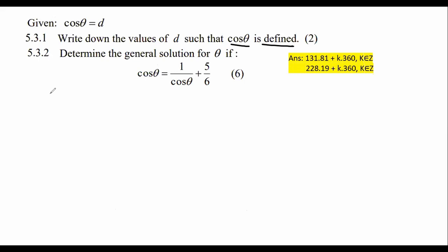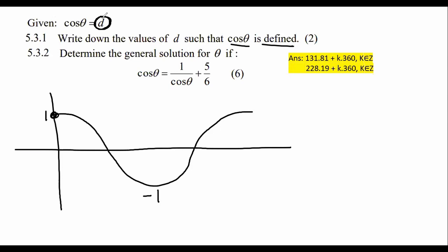If we look at a normal cosine graph, it goes like this, and like this. It normally starts at one and goes down to minus one. So what are the y values or the d values?